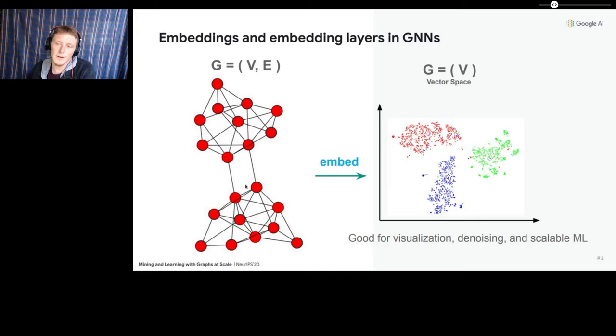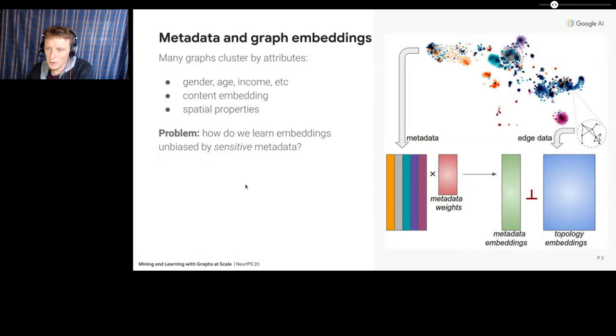We also know that graphs have complex clustering properties that often correlate with external node attributes or metadata. So a very current problem area in machine learning on graphs is how to debias node embeddings from node metadata, or how to learn embeddings that are invariant to the metadata. This is useful if you are trying to build a graph learning system that is blind to sensitive features of nodes, like personal demographic data such as age or gender, or geographic data like county. So this talk will cover some of our work in this area.